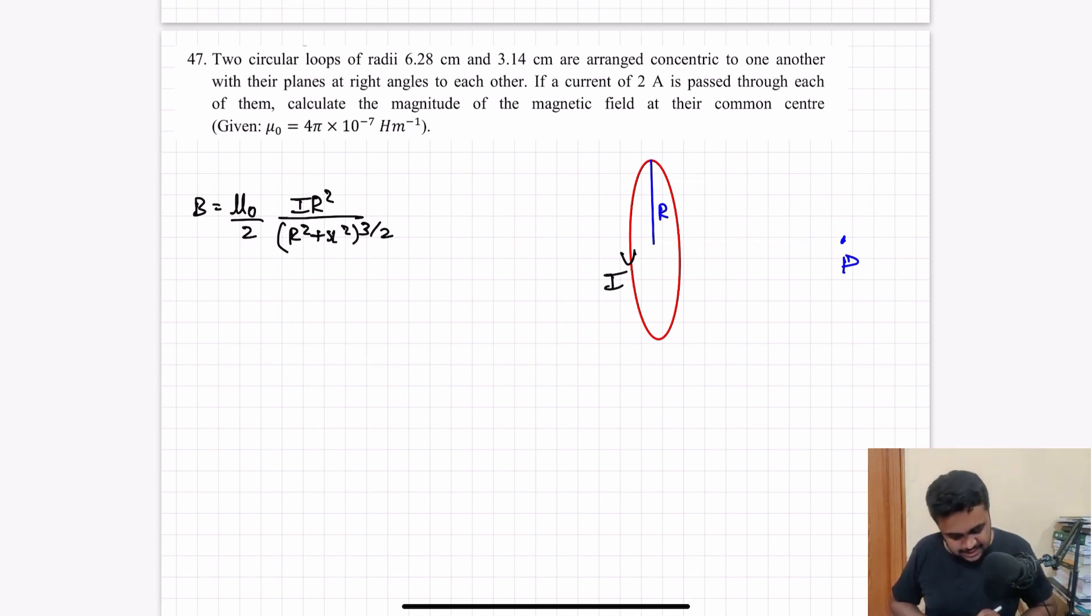The question is: Two circular loops of radii 6.28 cm and 3.14 cm are arranged concentric to one another with their planes at right angles to each other. If a current of 2 ampere is passed through each of them, calculate the magnitude of the magnetic field at their common center.